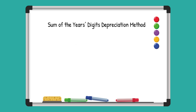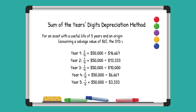So let's say a company buys equipment for $50,000 with a useful life of five years. The first step is to calculate the sum of the year's digits. For five years, it's one plus two plus three plus four plus five, which equals 15.